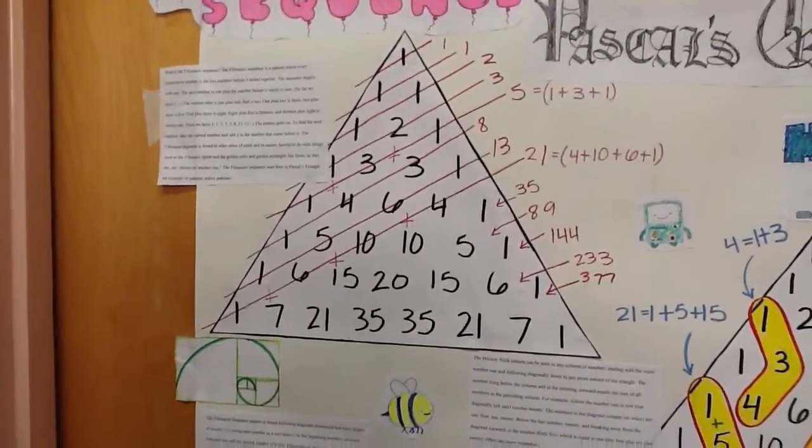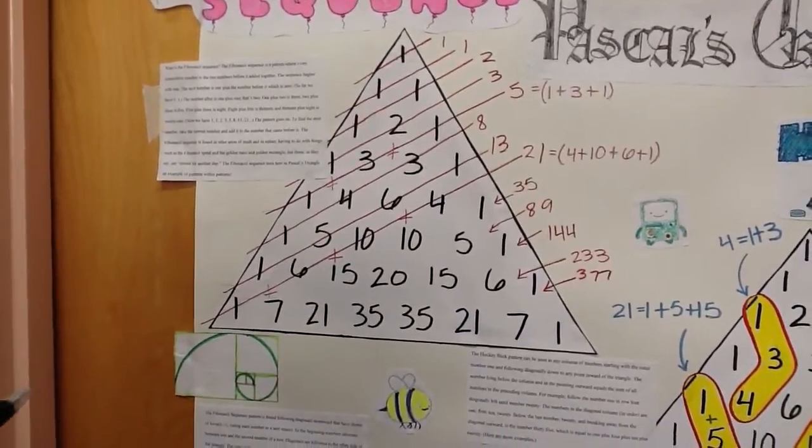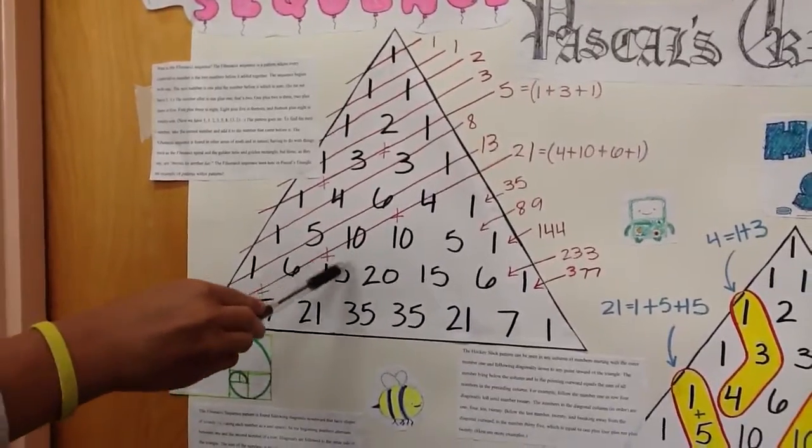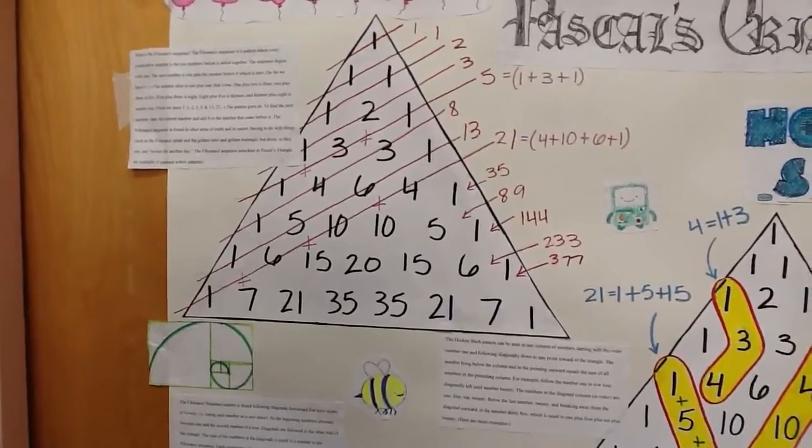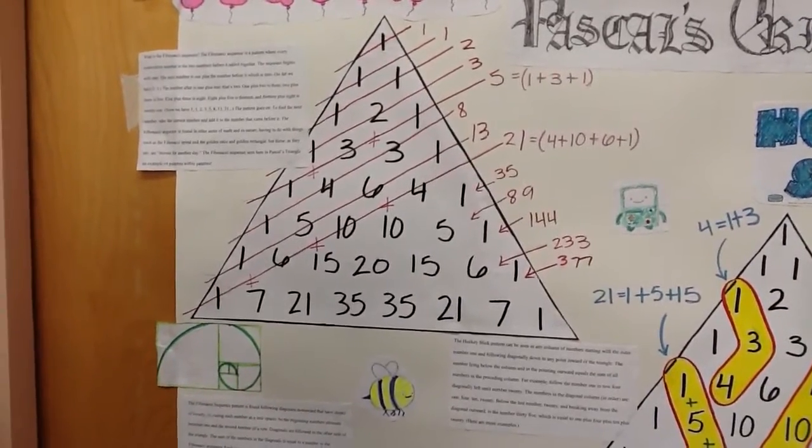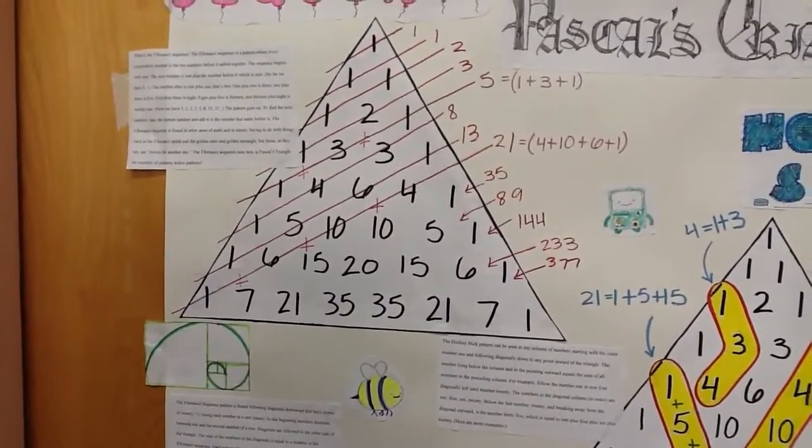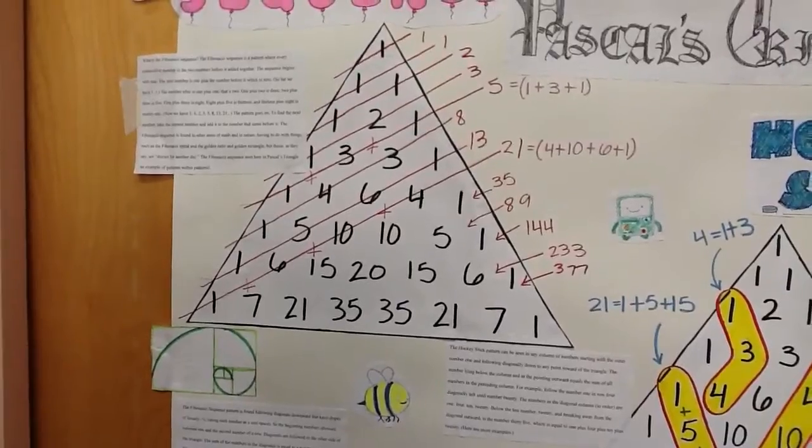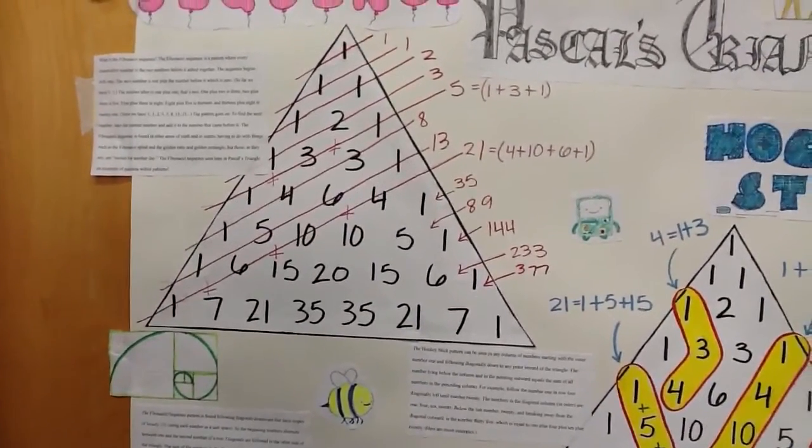And that's found following more diagonals downward that have slopes of, I think you can see it's loosely 1 over 2. So the beginning numbers alternate between 1 and the second number of a row and the diagonals are followed to the other side of the triangle. So the sum of the numbers in the diagonals is equal to a number in the Fibonacci sequence.